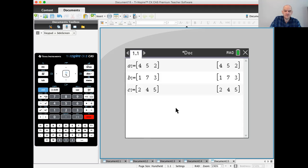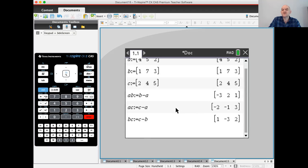So A is (4,5,2), B is (1,7,3), and C is (2,4,5). The vector from A to B is B minus A. The vector from A to C is C minus A. To get the vector from B to C, starting at B and ending at C, we do C minus B. This is all review. You do terminal minus initial.